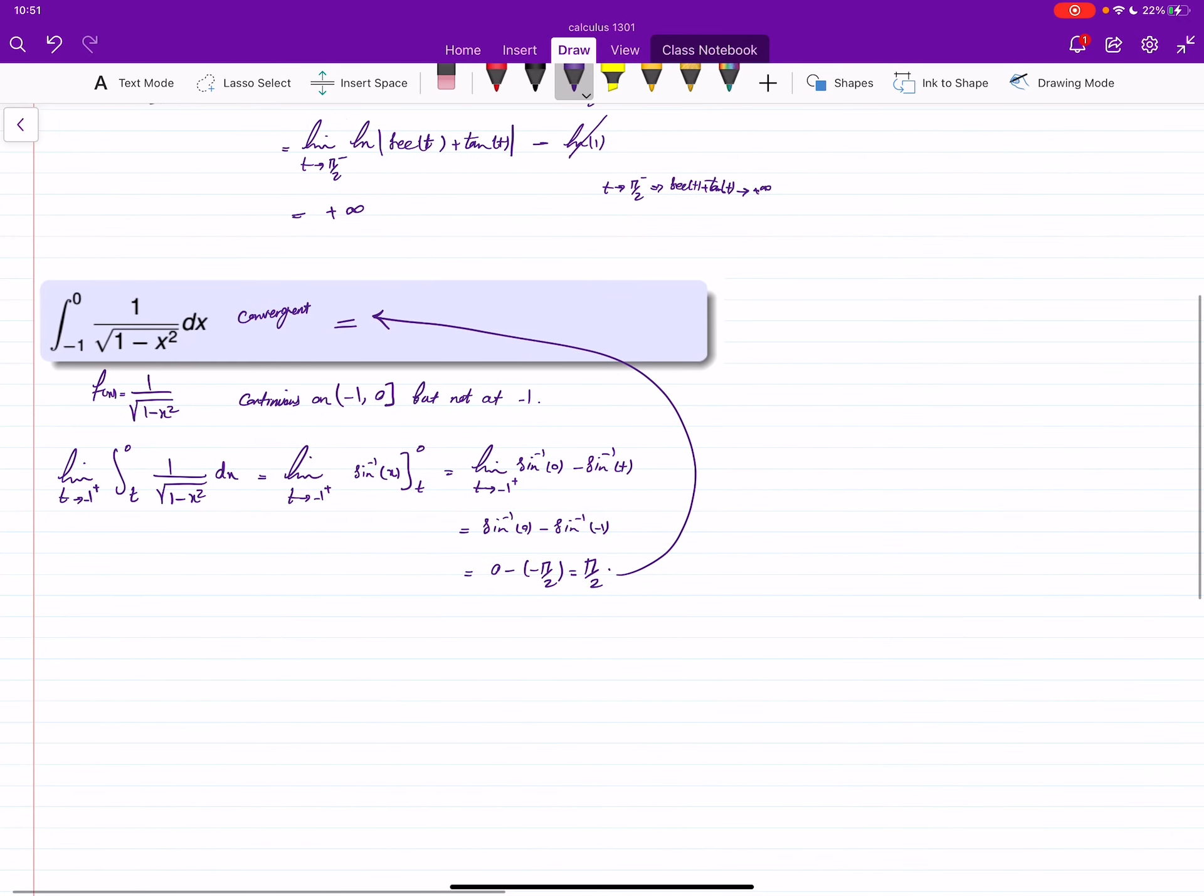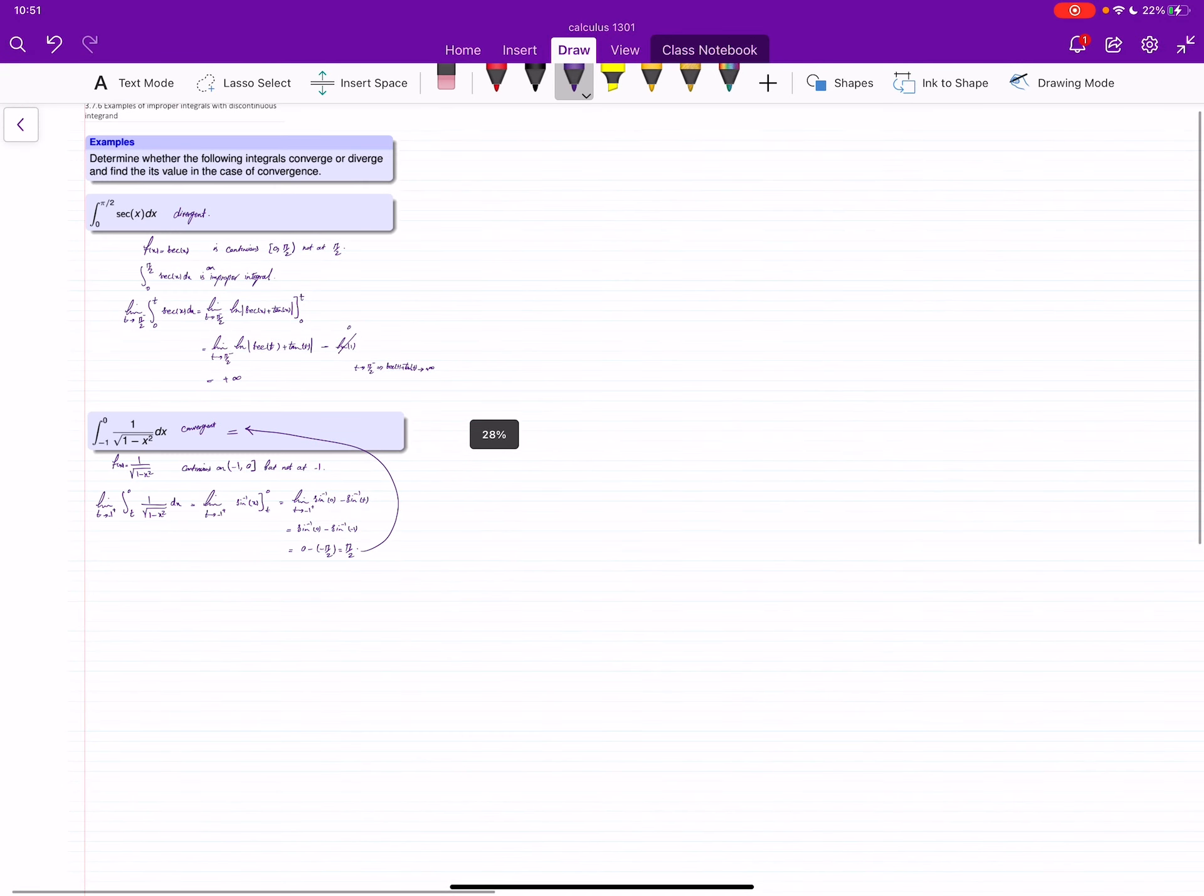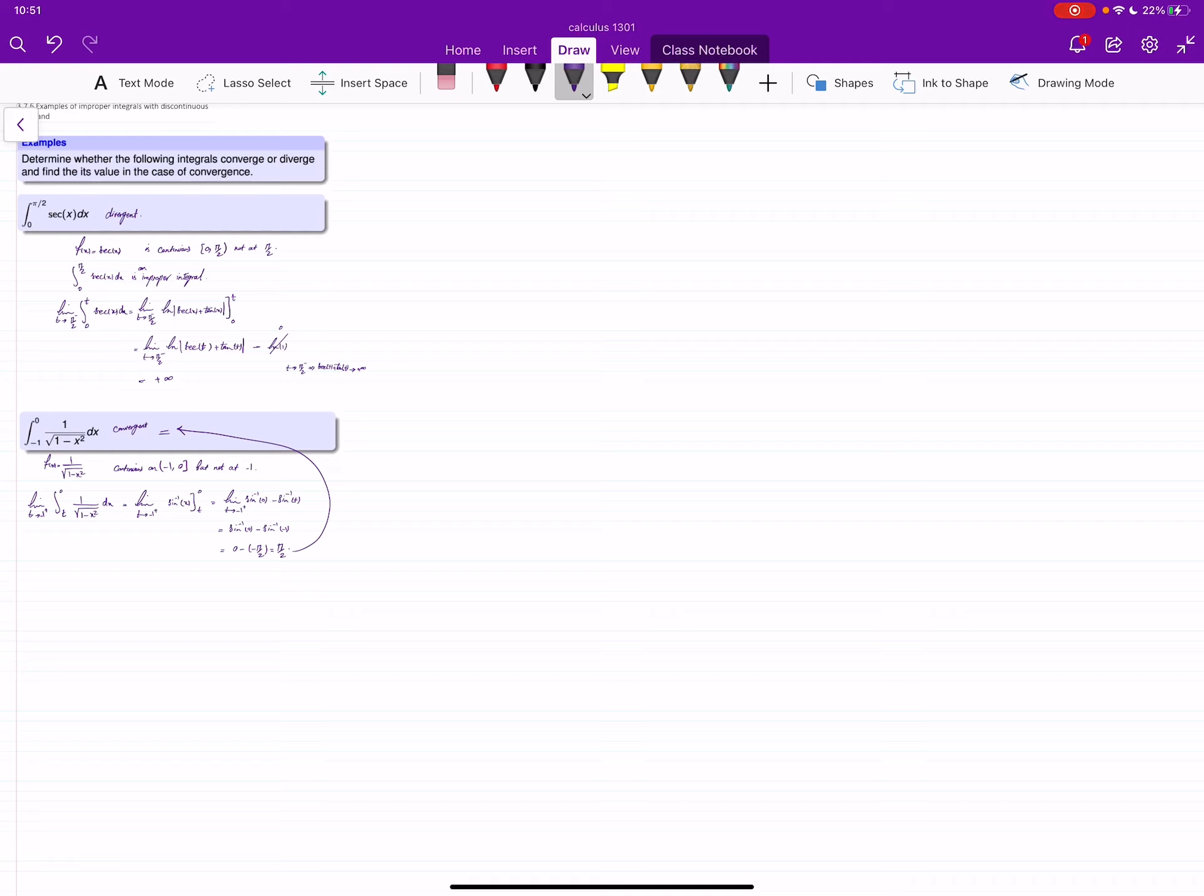In improper integrals, always you have to make sure that the function is continuous on the domain. If it is not, you have to break it into a limit and integral. Improper integrals are a limit and an integral.